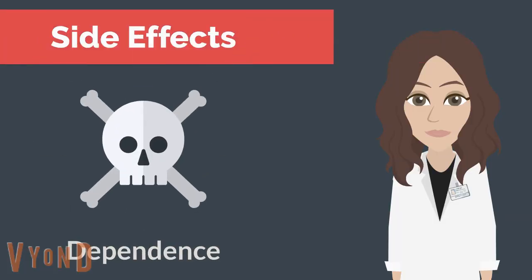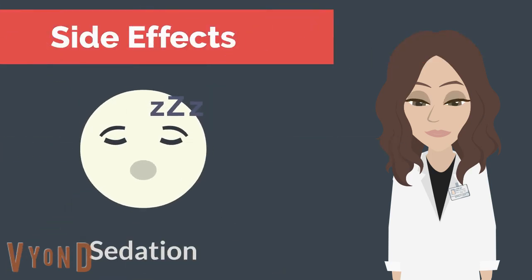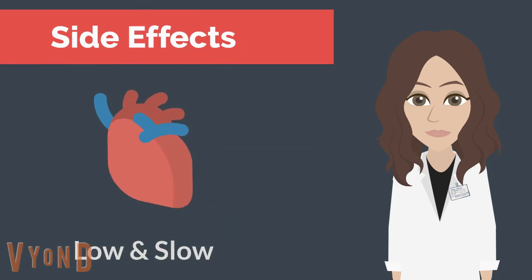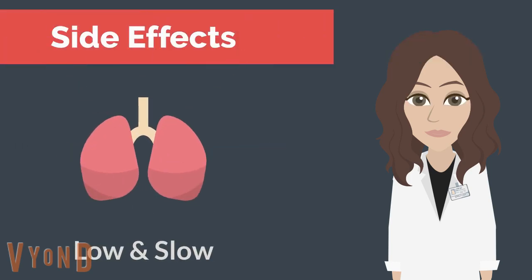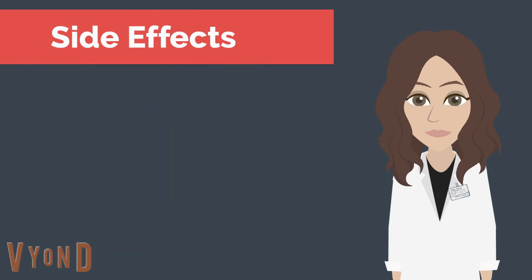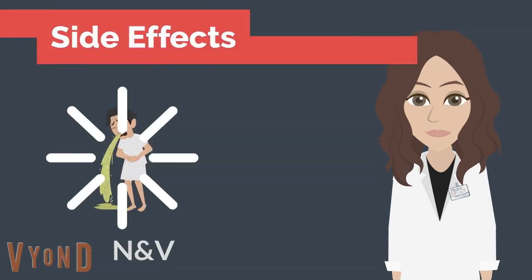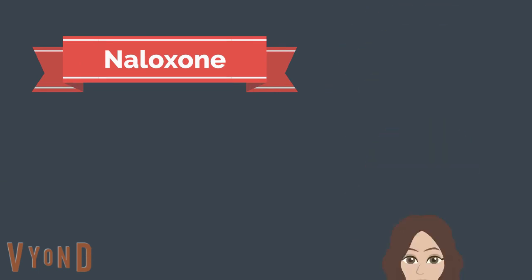Opioid drug side effects include dependence or addiction, CNS depression, sedation, making vital signs low and slow, such as lowering heart rate, lowering respiratory rate, and lowering blood pressure or causing hypotension, especially orthostatic hypotension, as well as constipation, nausea, and vomiting. The antidote for opioid drugs, including heroin, is naloxone, which is an opioid receptor antagonist.